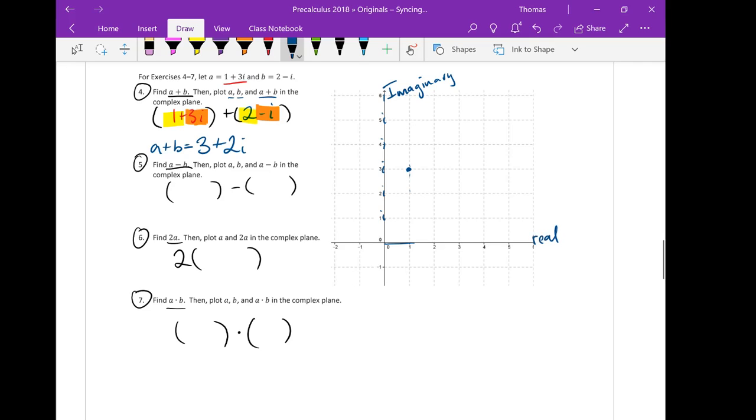So 3 plus 2i—did I do that backwards? I completely did that backwards. Good, learning from our mistakes. The real part is 3, and the imaginary part is 2i. So I'm going to go over 3 on my real axis and up 2 on our imaginary axis. Good. I'm glad we had that example to fix our mistakes. So 3 plus 2i is right there. That's going to be a plus b.